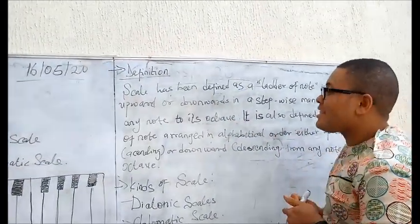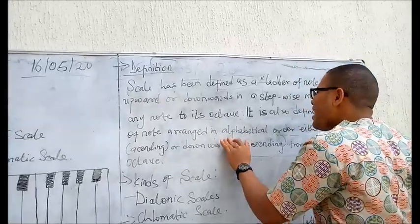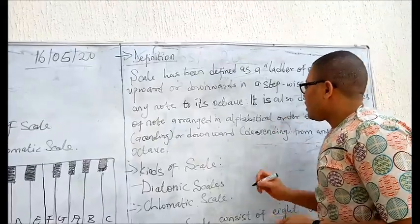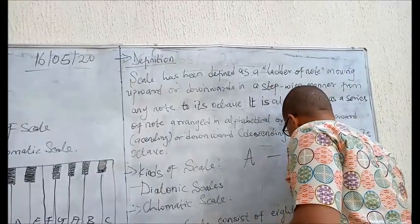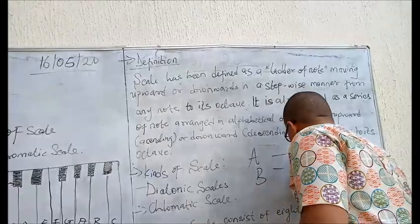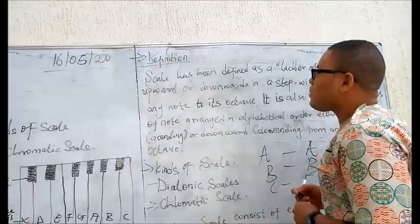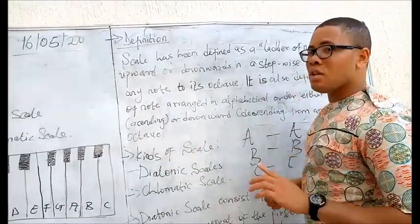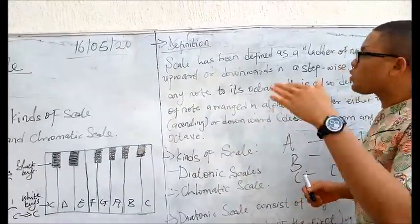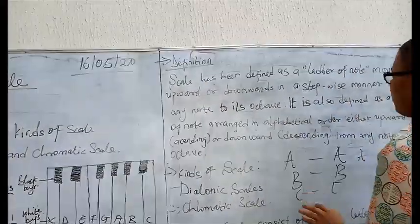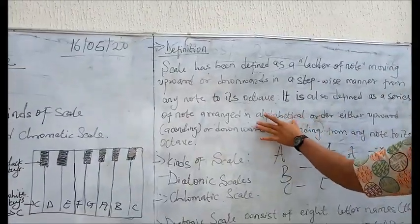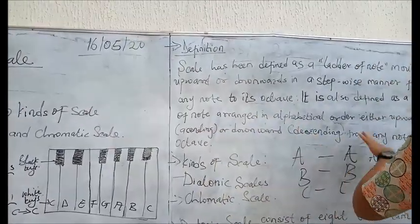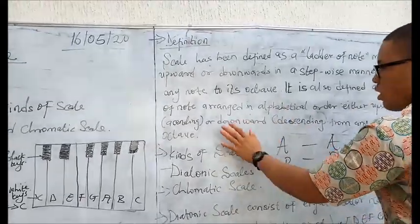It is also defined as a series of notes arranged in alphabetical order, either from A to A or from B to B or from C to C. It can't be from A to E. It must be from the tonic to the octave and not from the tonic to the leading note or any other note of the scale, arranged in alphabetical order either upwards ascending or downwards descending from any note to the octave.